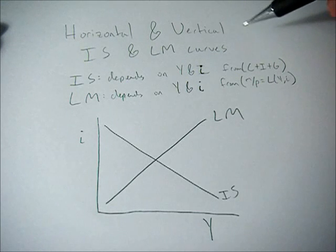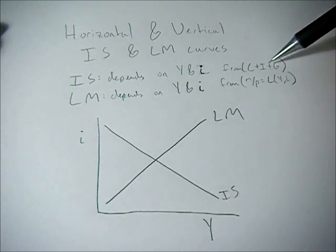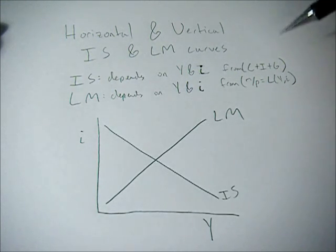So the IS depends on Y and little i from the C plus I plus G potentially plus net exports equations.